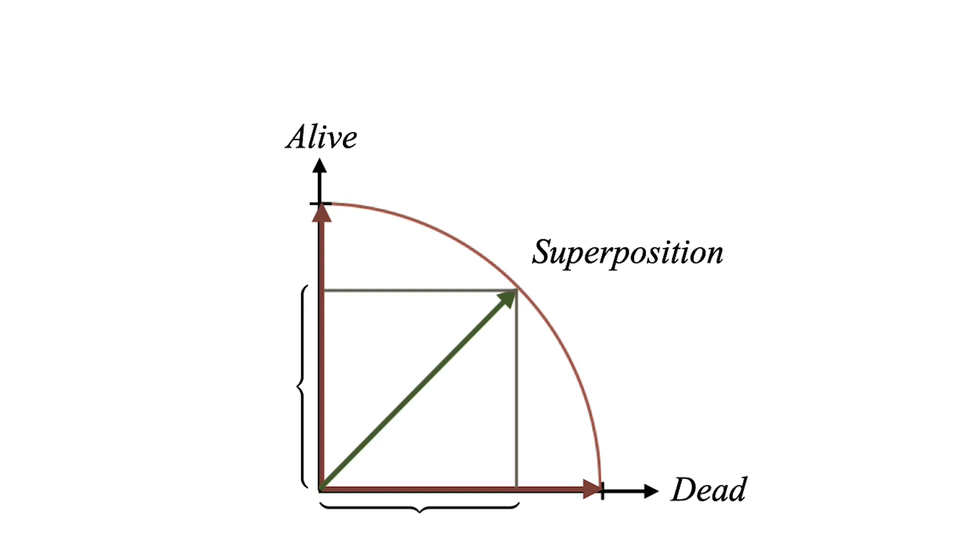Superpositions are fragile though, and when we measure them, they collapse to either an alive cat or a dead cat.